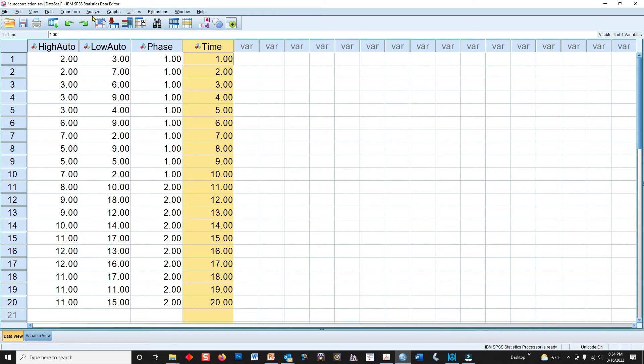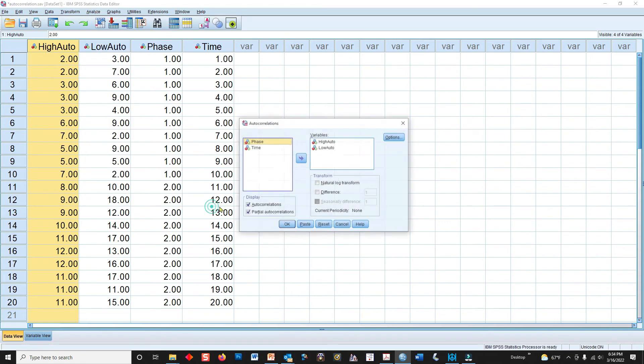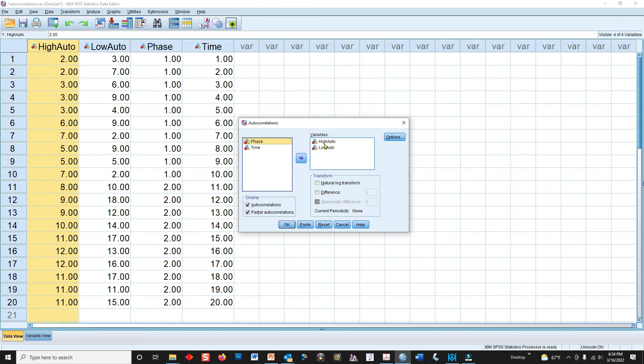First, let's get the autocorrelations for these two variables, the high and the low autocorrelation. To get the autocorrelations, we go to forecasting, autocorrelations, and you see that I already tested it out here. We don't need the partial correlations for this example.